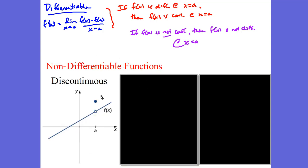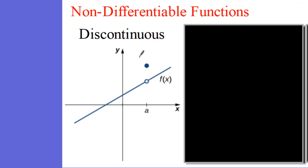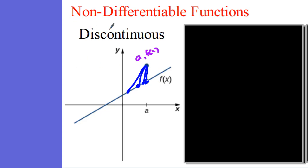Let's take a look at the first case: a removable discontinuity. At point a we have f of a up here. If we look at the definition of the derivative, we take a point and find the slope of the secant line — some distance h away. As we get closer and closer, you can see the slope is changing and becoming undefined. The slope of the tangent line becomes undefined as we approach point a from either side, which means the derivative is not definable — the function is not differentiable when we have a discontinuity.